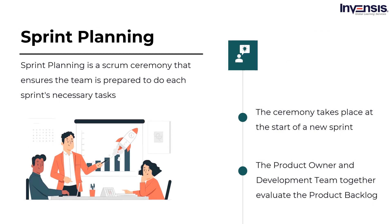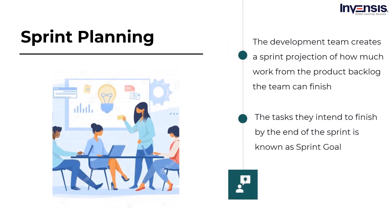The first ceremony is Sprint Planning. Sprint Planning is a Scrum ceremony that ensures the team is prepared to do each sprint's necessary tasks. This ceremony takes place at the start of a new sprint and is intended to bring the product owner and development team together to evaluate the product backlog — a prioritized list of tasks for the development team based on the roadmap and its objectives. Sprint Planning prepares the entire team for success during the sprint. The product owner will arrive with a prioritized product backlog, they debate each issue with the development team, and the group assesses the effort required. The development team will then create a sprint projection indicating how much work from the product backlog the team can finish.